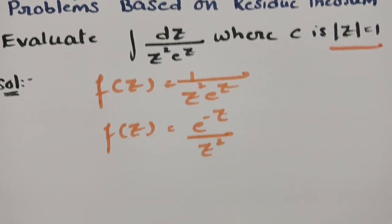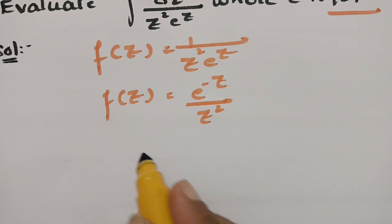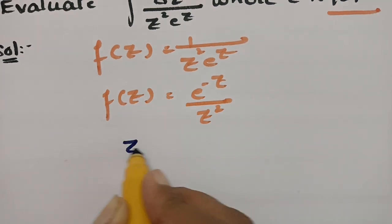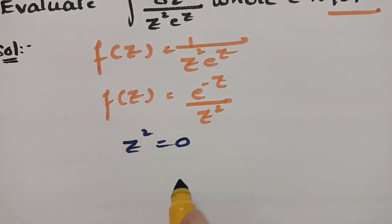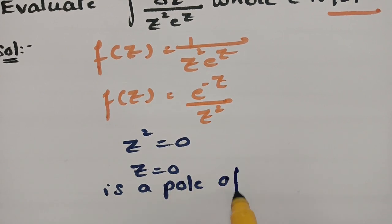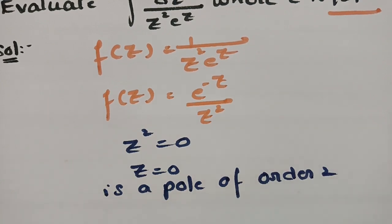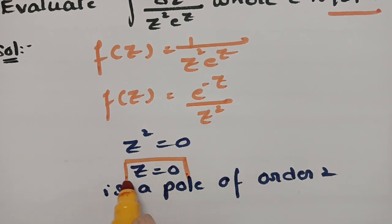First of all, we have to find the poles for this given function. To find the poles, we equate the denominator to zero. Here the denominator is z-squared; setting it equal to zero gives z = 0, which is a pole of order 2.